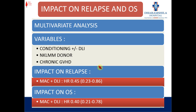In univariate analysis, three factors emerged: conditioning with and without DLI, NK-ligand mismatched donor, and chronic GVHD. However, in multivariate analysis examining impact on relapse and overall survival, only one factor came up — that is myeloablative conditioning with DLI.